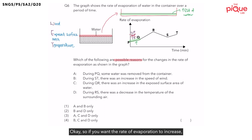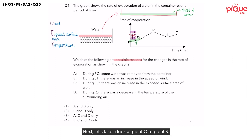So if you want the rate of evaporation to increase, we will need the speed of wind to increase, and we will also need the temperature to increase.